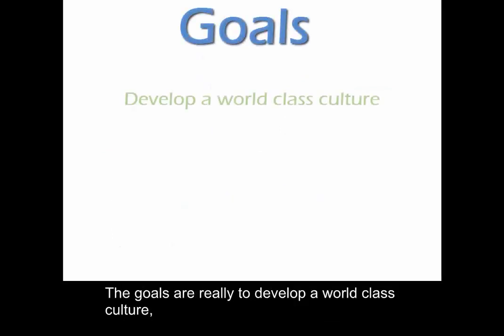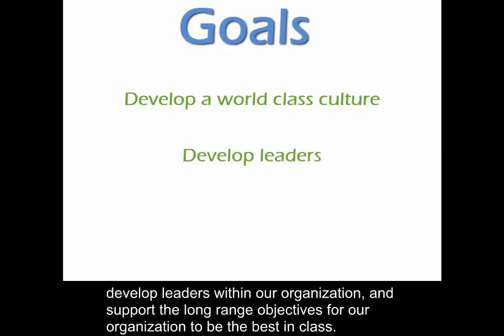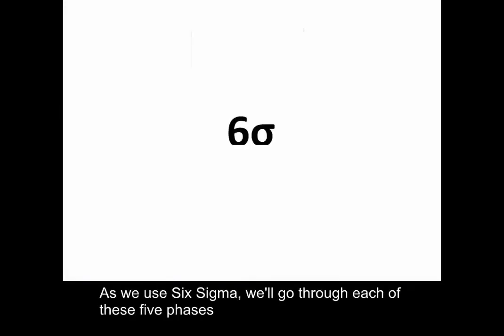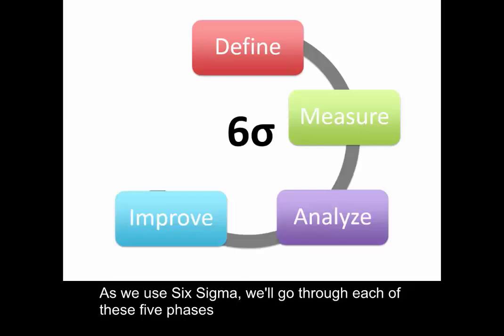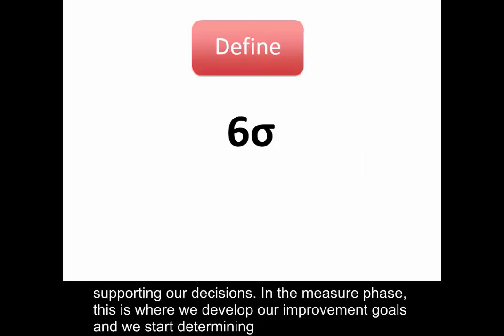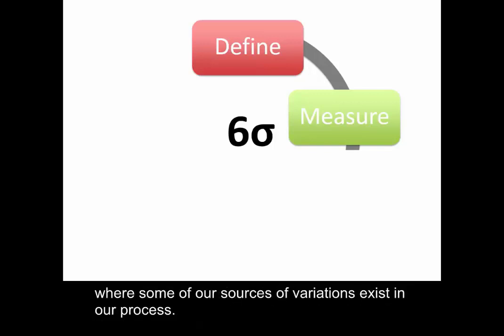The goals are really to develop a world-class culture, develop leaders within our organization, and support the long-range objectives for our organization to be the best in class. As we use Six Sigma, we'll go through each of these five phases. In the Define phase, we really understand what processes are involved, who the team members are, and what metrics are supporting our decisions. In the Measure phase, we develop our improvement goals and start determining where some of our sources of variation exist in our process.